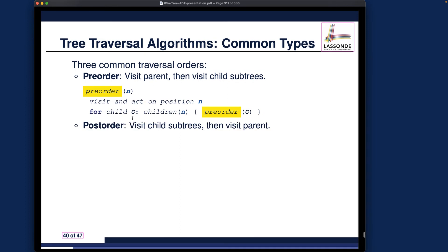The next traversal is called post-order. Post-order is like the opposite of pre-order. What we want to do is recursively visit each of the child nodes from left to right, and then finally visit the parent as the base case. In pre-order we visit the parent first; in post-order we visit the parent last. The way we recursively visit the child nodes from left to right remains the same between the two.